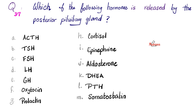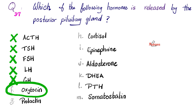Which of the following hormones is released by the posterior pituitary gland? I gave you many choices. Let's do it one by one. ACTH — anterior pituitary. TSH — anterior pituitary. FSH — anterior pituitary. LH — anterior pituitary. Growth hormone — anterior pituitary. Oxytocin — posterior pituitary. That's the answer! Prolactin — anterior pituitary. Cortisol — adrenal cortex. Epinephrine — adrenal medulla. Remember, the adrenal medulla secretes the catecholamines: epinephrine (adrenaline), norepinephrine (noradrenaline), and dopamine.